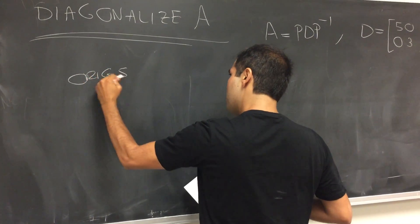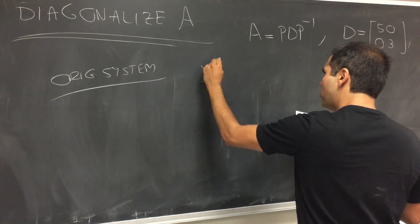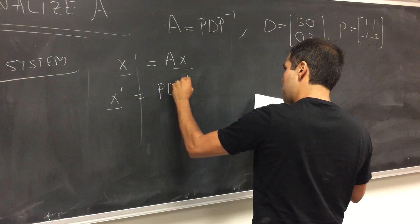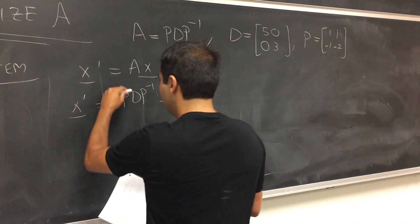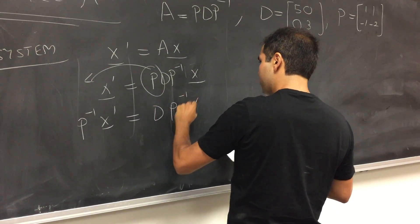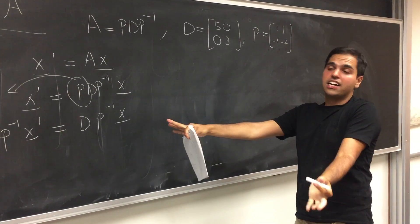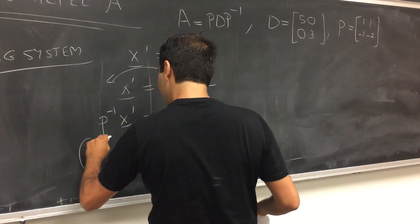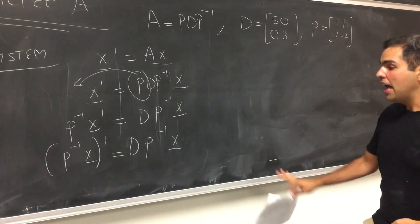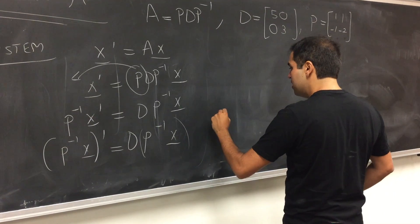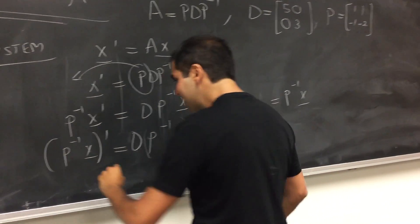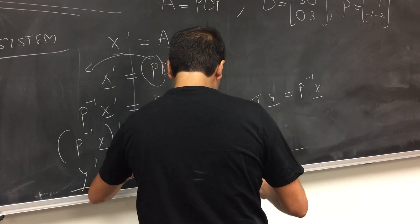Our original system is x prime equals A·x. Since A equals P·D·P inverse, we have x prime equals P·D·P inverse·x. Moving P to the left-hand side gives P inverse·x prime equals D·P inverse·x. Since P inverse is a constant matrix, we can bring it inside the derivative. So let Y equal P inverse·x. Then we have Y prime equals D·Y.